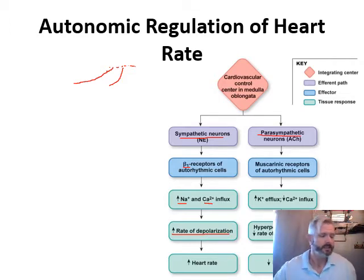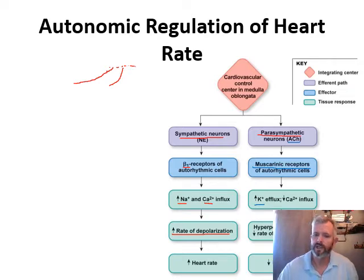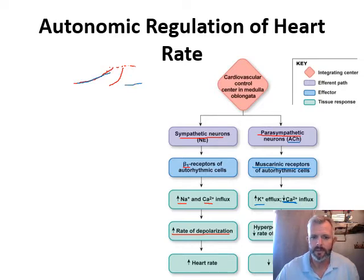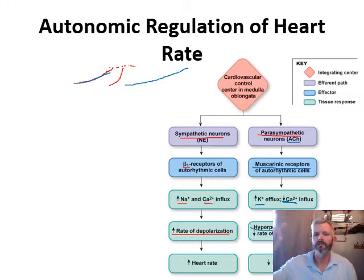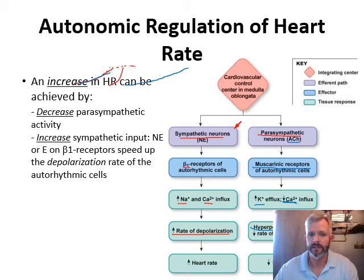Increasing heart rate increases cardiac output, as long as stroke volume stays the same. With our parasympathetic, we have muscarinic receptors. Activation of those receptors by acetylcholine increases potassium efflux — working against depolarization — and decreases calcium influx, also working against depolarization. So the pacemaker potential is drawn out much longer to reach threshold, hyperpolarizing the cell and decreasing the rate of depolarization. If stroke volume stays the same but heart rate goes down, cardiac output also goes down.